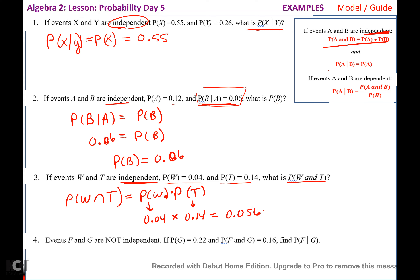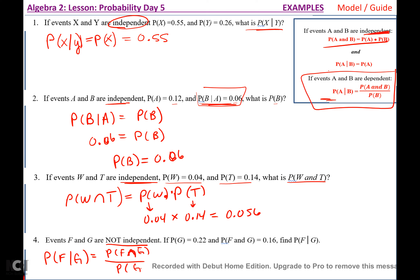For number four, events F and G are not independent. If P(G) = 0.22 and P(F and G) = 0.16, find P(F|G). P(F|G) = P(F and G) / P(G) = 0.16 / 0.22 = 0.7273.